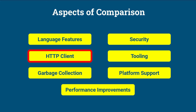HTTP Client. Java 8 relied on the HTTP URL connection API for making HTTP requests, which was limited in functionality and flexibility. Java 11 introduced a new HTTP Client API in the java.net.http package, providing a modern, flexible, and asynchronous API for making HTTP requests.